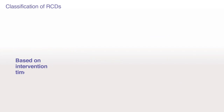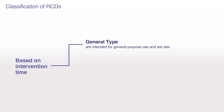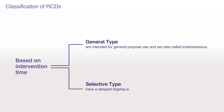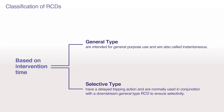Based on intervention time: General type are intended for general purpose use and are also called instantaneous. Selective type have a delayed tripping action and are normally used in conjunction with a downstream general type RCD to ensure selectivity.